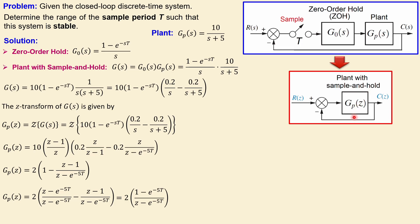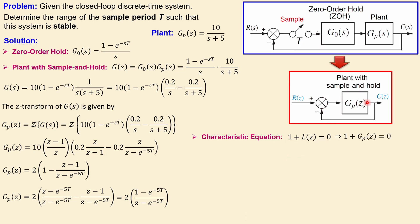Now let's look at the characteristic equation, which is important to determine the range of our sample period. The characteristic equation is 1 + L(z) = 0, a general formula also used in the root locus method. The loop transfer function here is just G_p(z), since feedback gain is 1. So we set 1 + G_p(z) = 0.